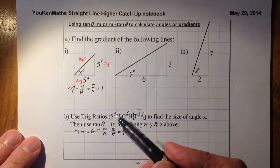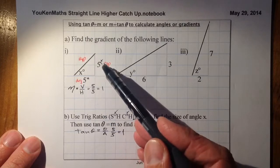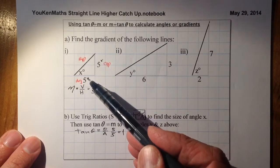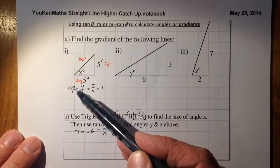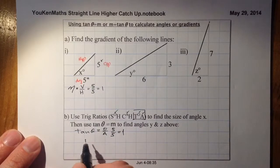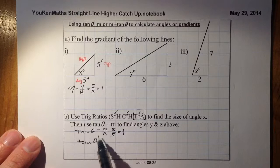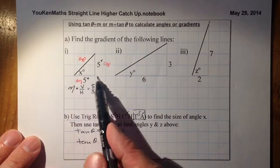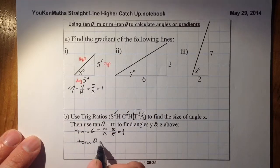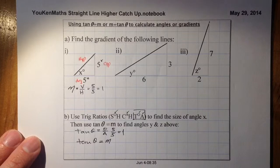The opposite over the adjacent is the same as the vertical over the horizontal, and the vertical over the horizontal gives the gradient. So we can use the formula tan θ equals m — where m is the gradient — to work out the angle a line makes with the horizontal. That's the formula we're going to start using here.